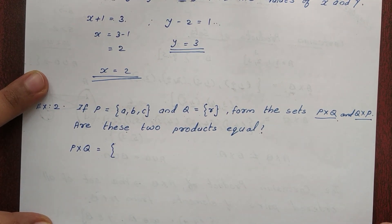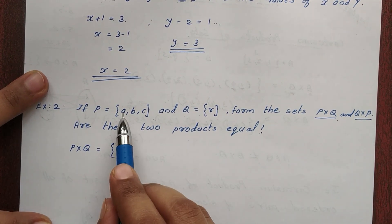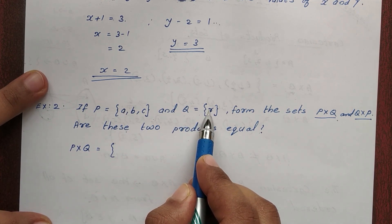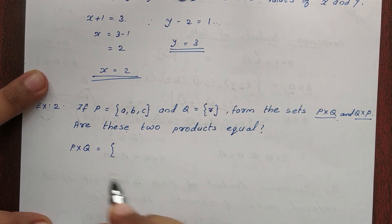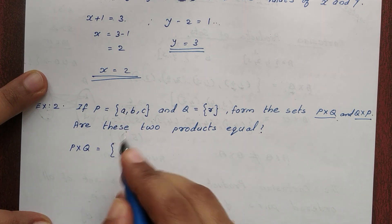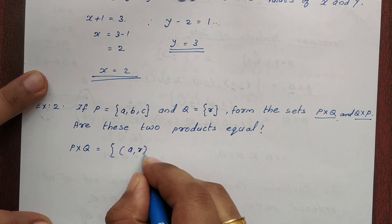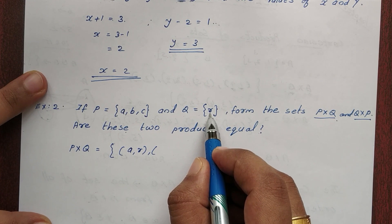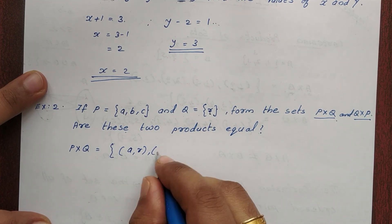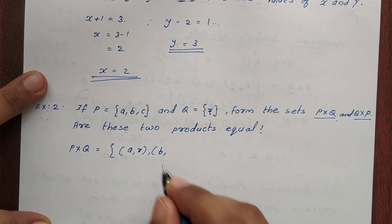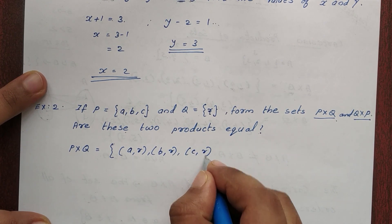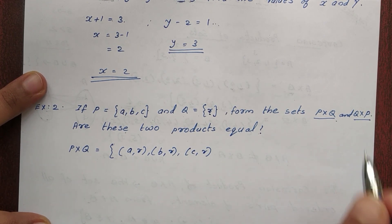So we have sets P and Q. P×Q: first element is A, second is R — giving (A, R). Then (B, R), then (C, R). So P×Q = {(A,R), (B,R), (C,R)}.